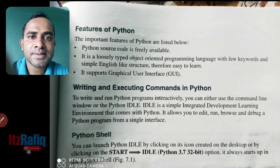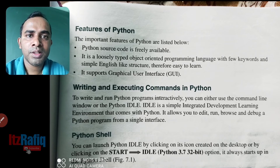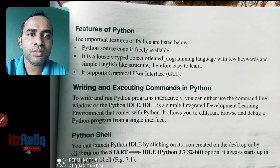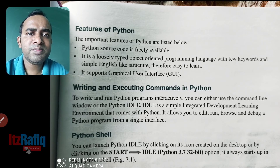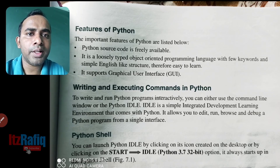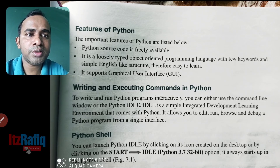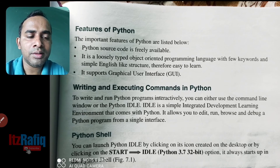In some programming languages like C and C++, you have to follow proper structure with brackets and semicolons, but in Python we don't have to do that. Just like simple English, we can write the program and it is very easy to learn. It also supports GUI — you can easily get a GUI interpreter to write Python programs, run them, and execute them on your computer.